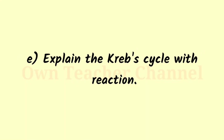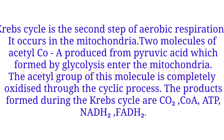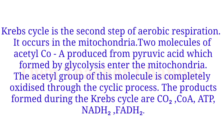Question 10: Explain the Krebs cycle with reaction. The Krebs cycle is the second step of aerobic respiration and it occurs in the mitochondria. Two molecules of acetyl-coenzyme A are produced from pyruvic acid formed during glycolysis and enter the mitochondria. The acetyl group is completely oxidized through the cyclic process. The products formed during the Krebs cycle are carbon dioxide, coenzyme A, ATP, NADH2, and FADH2.